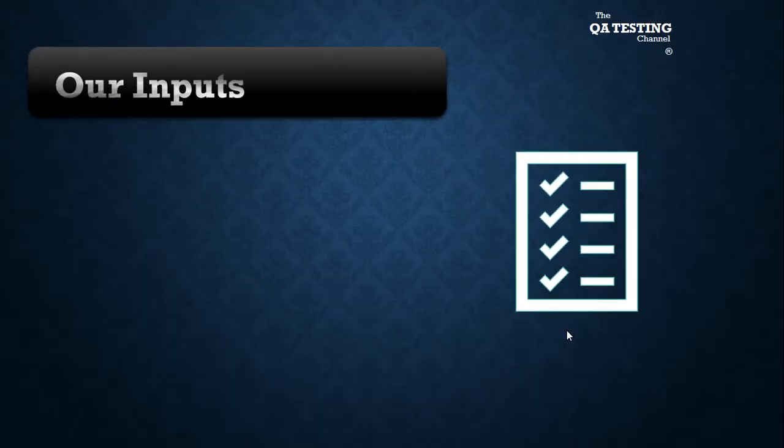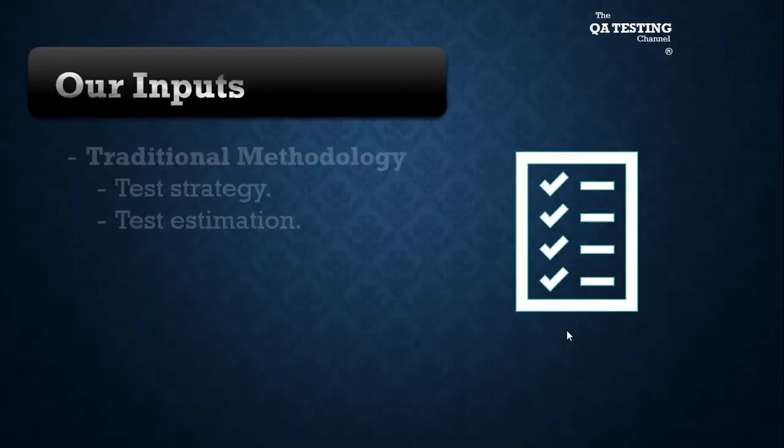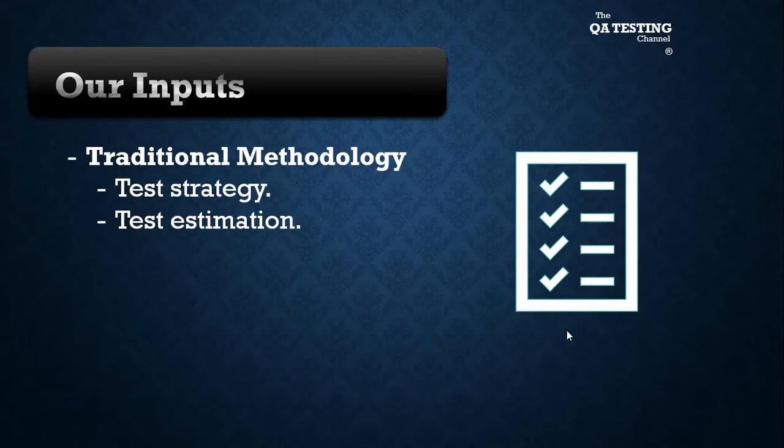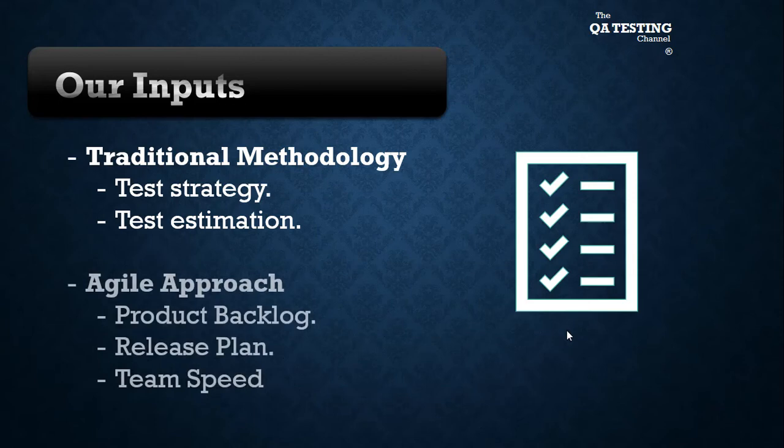What are our inputs? For traditional methodology: test strategy and test estimation. In the agile approach: product backlog, release plan, and team speed.